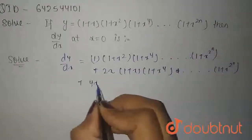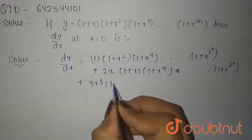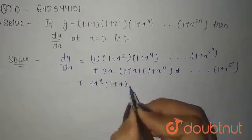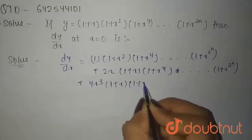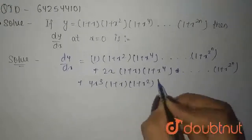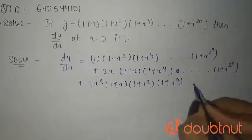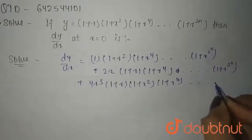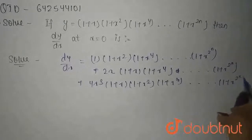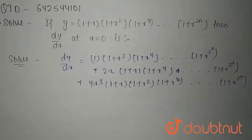Plus 4x cubed, multiplied by (1 plus x), (1 plus x squared), (1 plus x to the power 8), up to (1 plus x to the power 2^n).